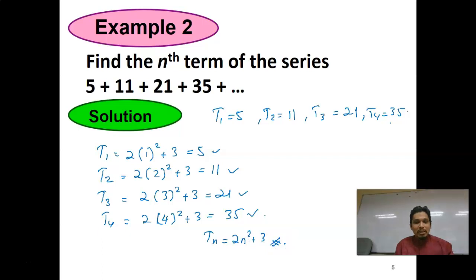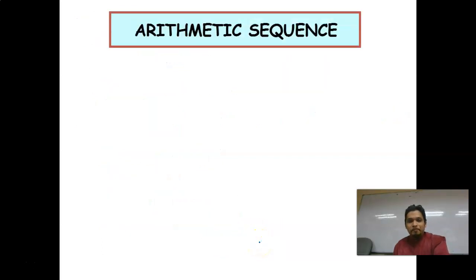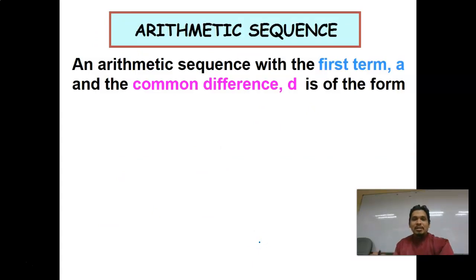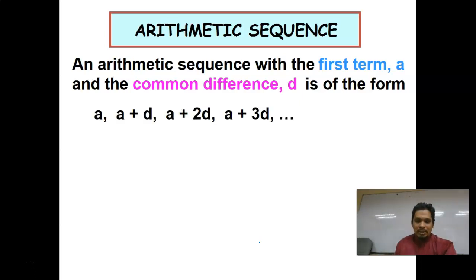So the formula is Tn = 2n² + 3. You may think of something that suits all the listed numbers, then express the general Tn formula for the nth term. Now, the arithmetic sequence with first term A and common difference D: A is the first term, then the second, third, and fourth terms follow.